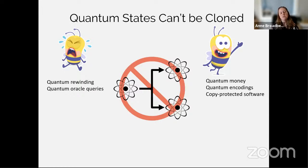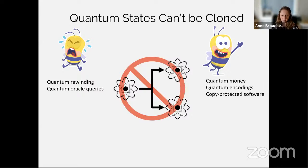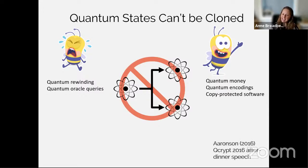There's a classical way of thinking that seems not to be directly applicable to the quantum case, but then thanks to hard work we're able to go around those obstacles. In cryptography that's also present in things like quantum rewinding, which is an element of zero-knowledge proofs, as well as quantum oracle queries. In recent years there's really been an increase in interest in this topic of unclonability.